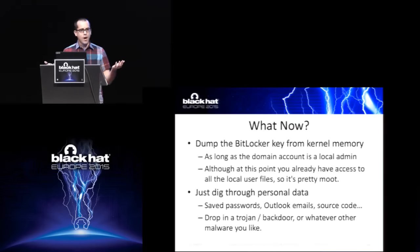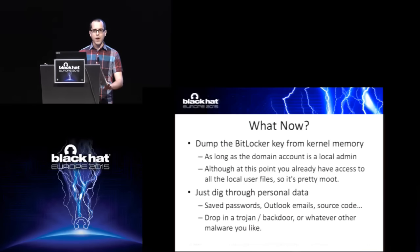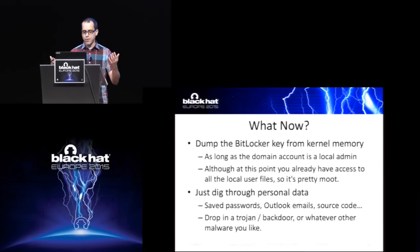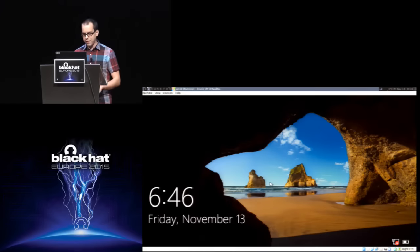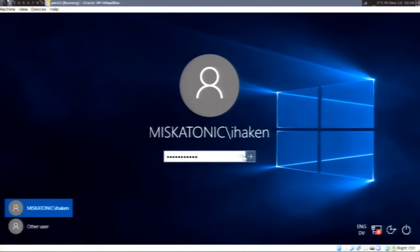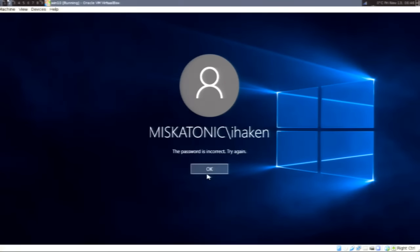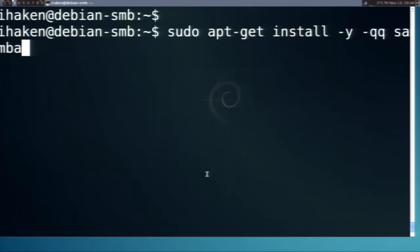So what do you do after that? Well, you're logged in. If you have local administrative rights, you can dump the BitLocker key out of kernel memory — although it's kind of moot at this point since you already have access to all the user's data. You can dig through whatever data is on there, drop in malware if this was just temporarily accessing someone's device. You can basically do whatever you want. So now let's try to do a demo. This is my encrypted machine. I don't know the password on it — if I just try and log in, it's not going to let me. So I'm going to set up my mock domain controller using this super cool package you may never have heard of called Samba.